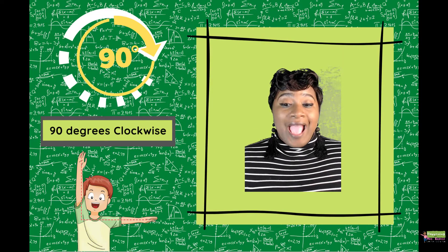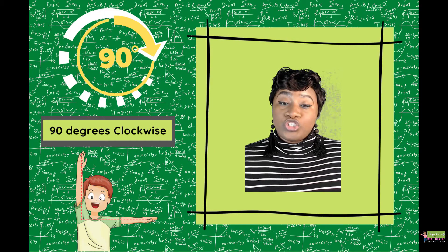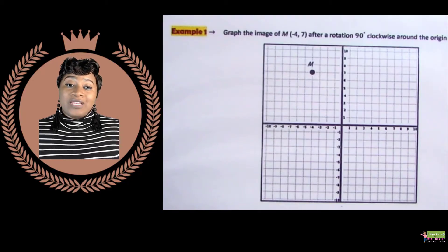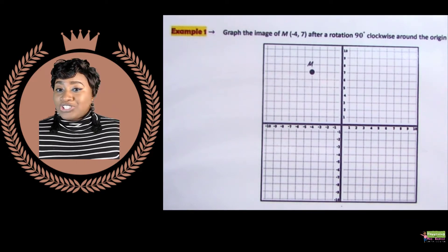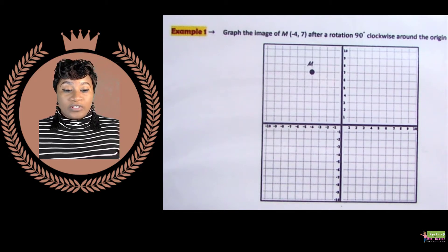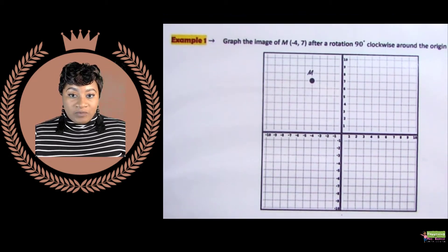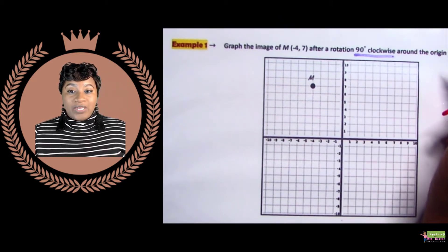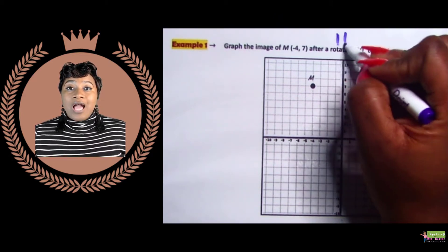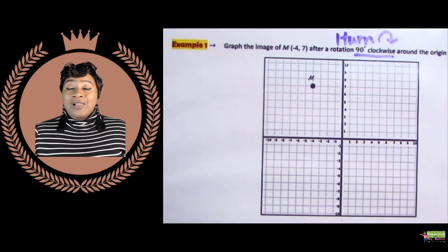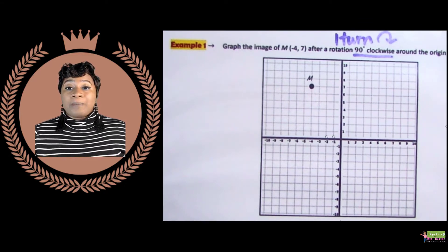In example one, graph the image of M(-4, 7) after a rotation 90 degrees clockwise around the origin. We're going to rotate point M 90 degrees clockwise. We know that 90 degrees represents one quadrant turn, and clockwise means we're going to rotate or turn our paper one turn to the right.